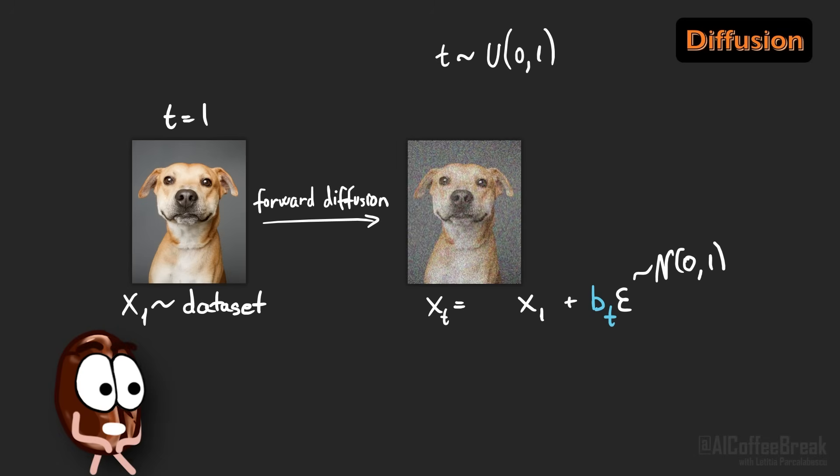And of course, to keep the image values of xt in the same range as x1, we also need to consider here only a fraction at of x1. But we are not quite done in writing the forward diffusion formula, because we can define a relationship between at and bt to combine them into just one variable. How? By assuming the input x1 to be unit variance and constraining the resulting noisy image xt to stay unit variance as well.